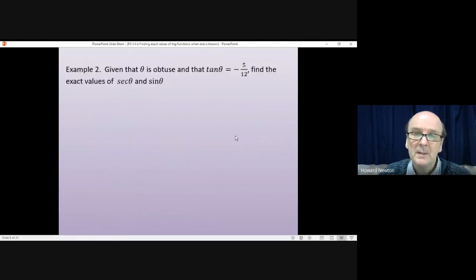Okay, second example. Now, this example is a lot more complicated. And the reason for the complication is two things. They tell us that theta is obtuse. Well, you can't get an obtuse angle in a right-angled triangle. And they also tell us that tan theta is minus 5 over 12.